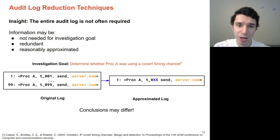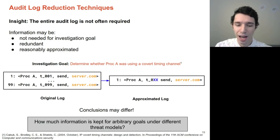And so this inspires our research question. How much information is kept for completely arbitrary analyst goals under different threat models?